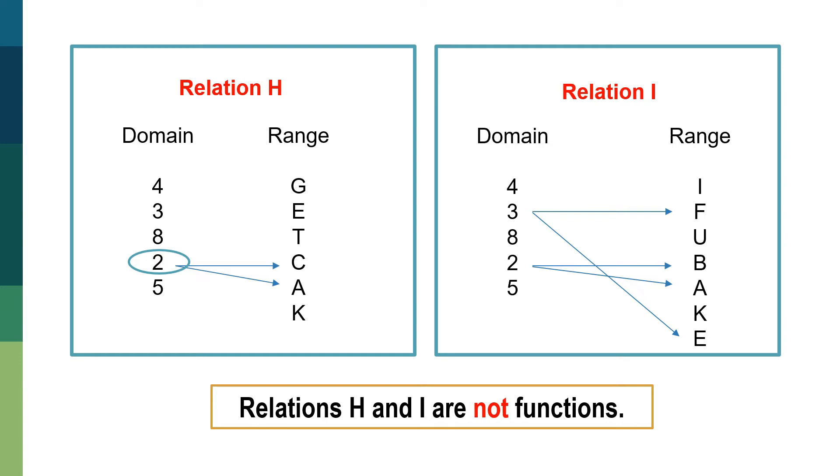Same goes for our relation I. As you can see, 3 is paired with letter F and letter E, and 2 is also paired with letter B and letter A. So meaning to say, the domains were paired twice for every two ranges on the other side of the relation. So relations H and I are not functions.